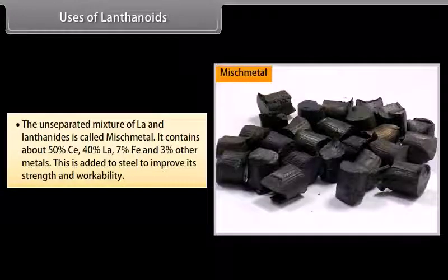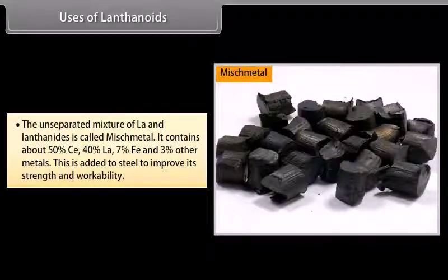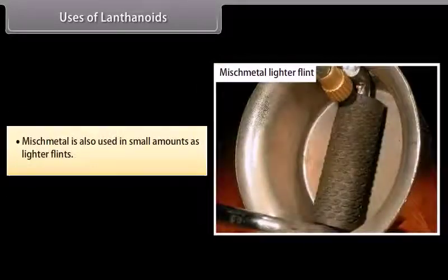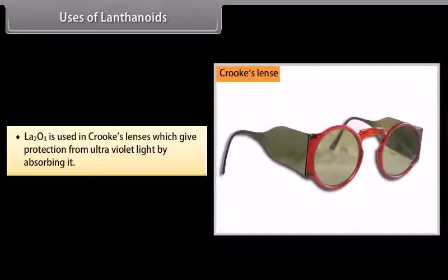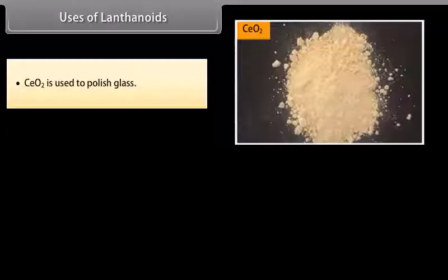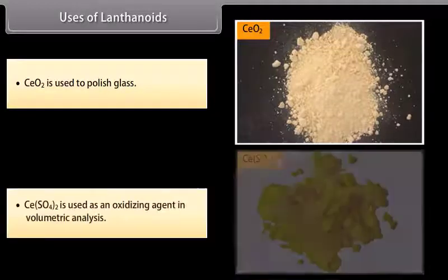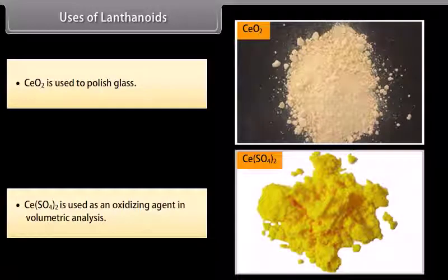An alloy of lanthanides called misch metal contains about 50% cerium, 40% lanthanum, 7% iron, and 3% other metals. It is added to steel to improve its strength and workability, and also used in small amounts as lighter flints. La₂O₃ is used in Crookes lenses, which give protection from ultraviolet light by absorbing it. CeO₂ is used to polish glass. Ce(SO₄)₂ is used as an oxidizing agent in volumetric analysis.